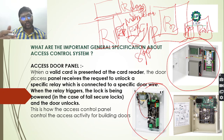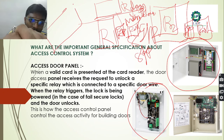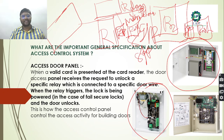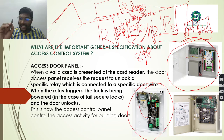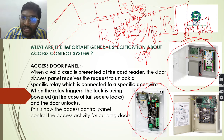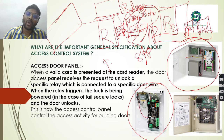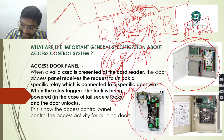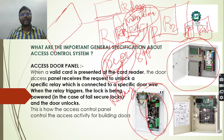When a valid card is presented near the card reader, it is the duty of the access control panel to receive the request and unlock the specific door. To magnetize or demagnetize the magnetic locks, we need the help of relays, which are present inside the access door panels.